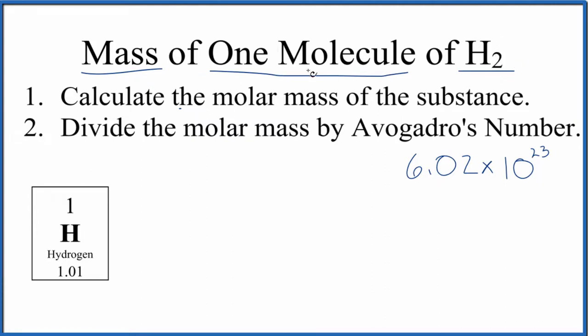So to find the mass of one molecule of H2, really all we're going to do is calculate the molar mass of the substance, that's the H2, and then we're just going to divide the molar mass by Avogadro's number. That'll give us the mass of one molecule of hydrogen gas here.